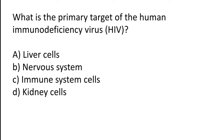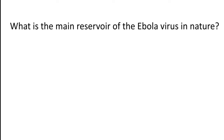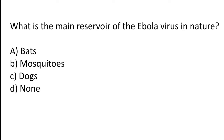What is the primary target of the human immunodeficiency virus, HIV? Options: Liver cells, Nervous system cells, Immune system cells, Kidney cells. The correct answer is option C — immune system cells are the primary target of the human immunodeficiency virus, HIV.